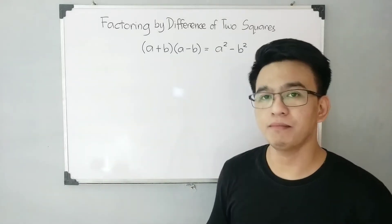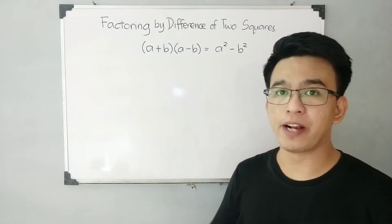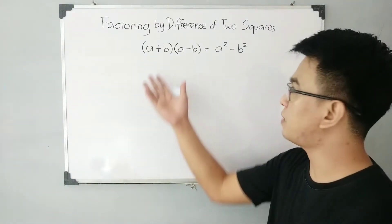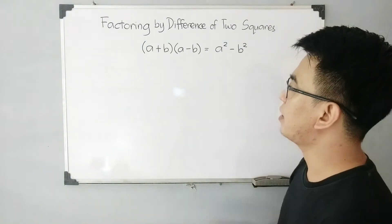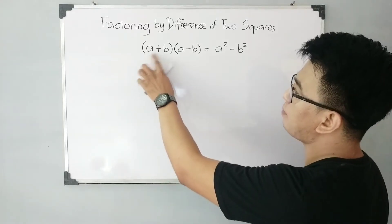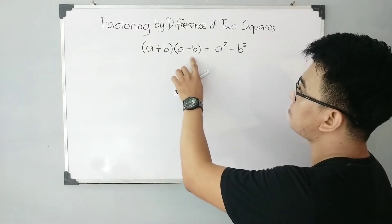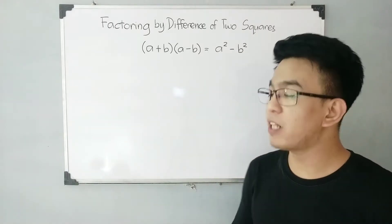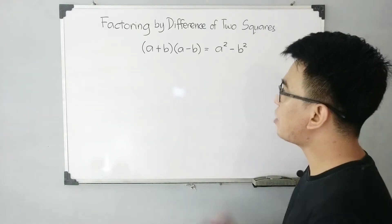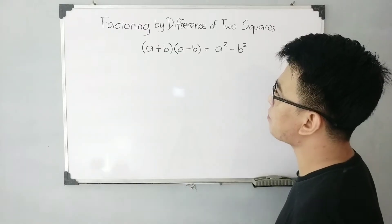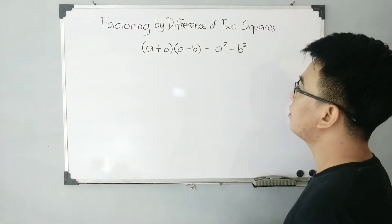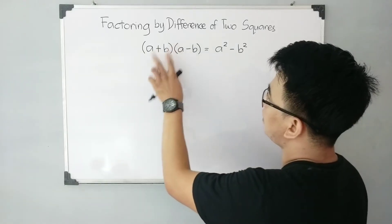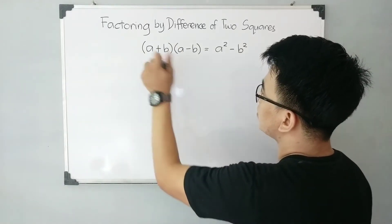Before we start factoring some expressions by difference of two squares, let us recall this special product. If we have the binomial a plus b times a minus b, it will give us the product of a squared minus b squared. By distributive property or by FOIL method, we can get this product from these two polynomials.